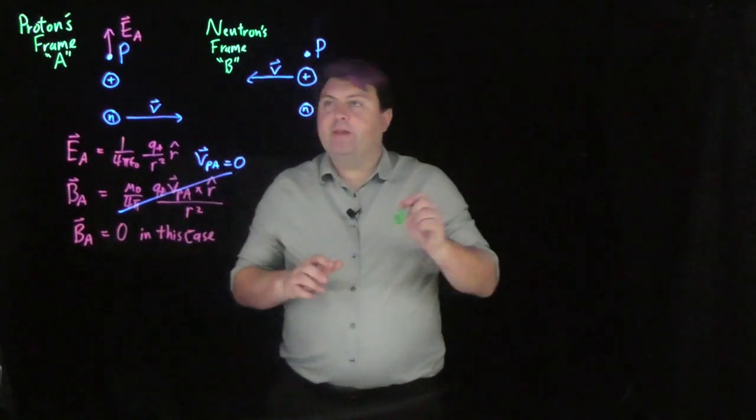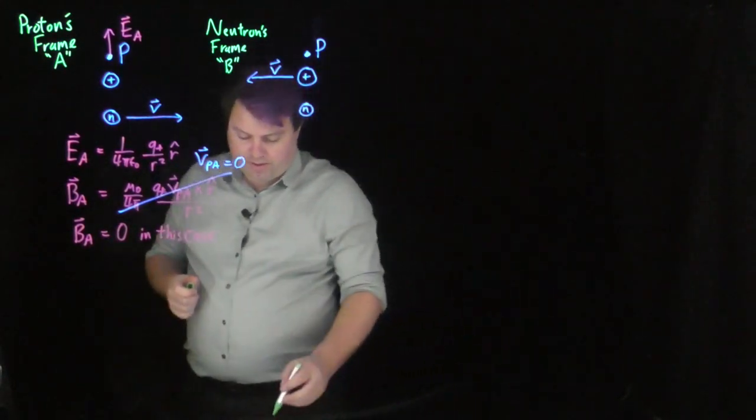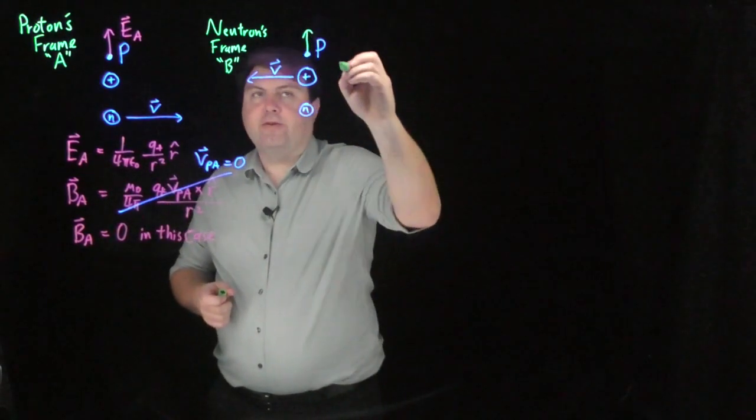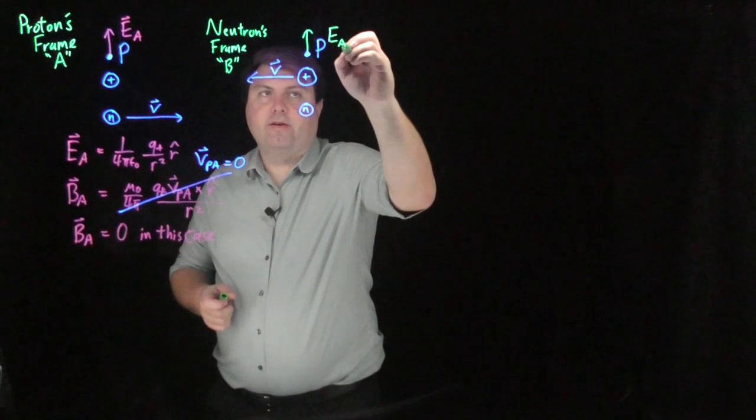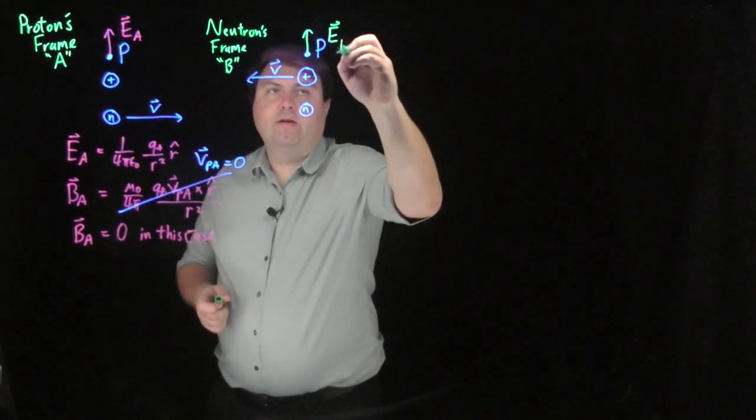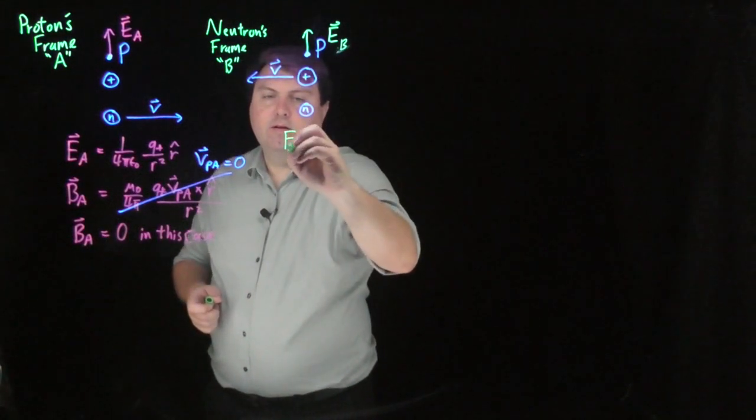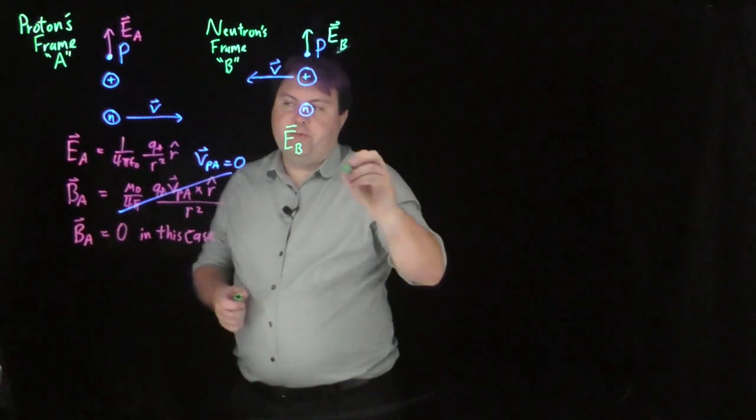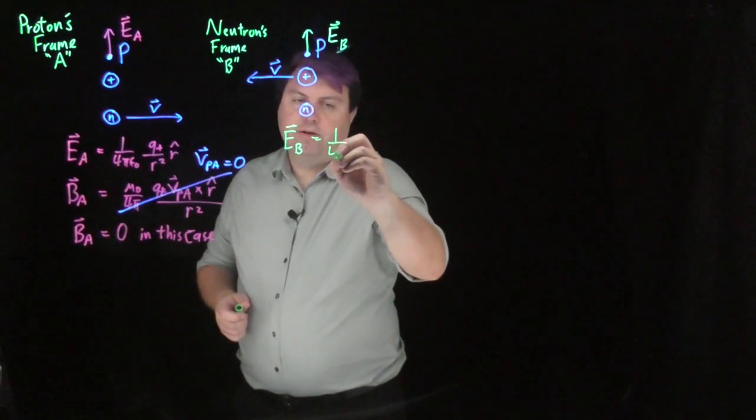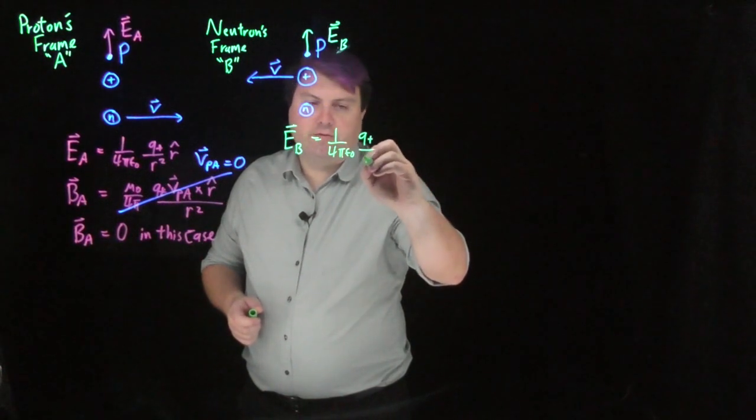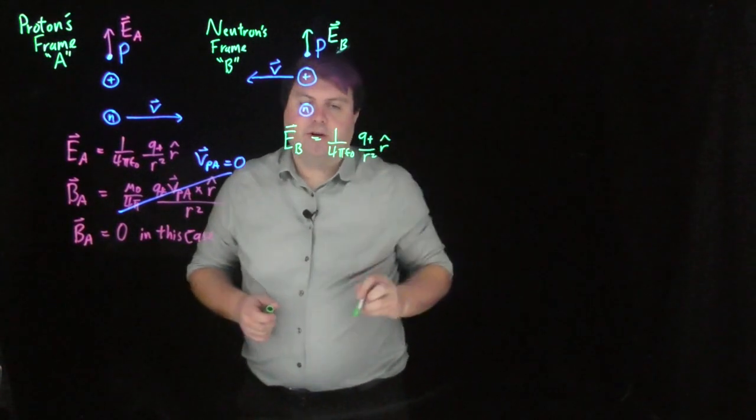So let's look at it from the neutrons frame over here. If we look at it, we can take a look at the electric field caused by frame B. The electric field in frame B is going to be equal to one over four pi epsilon naught q plus over r squared r hat,